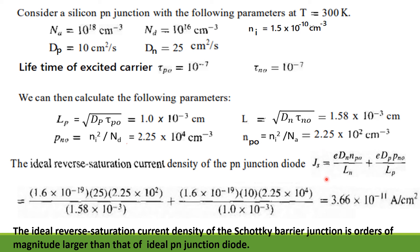We know that the ideal reverse saturation current density of the P-N junction diode is J equal to (eDN·npo / LN) + (eDP·pno / LP). Substituting all these values, we get the answer as 3.66 × 10⁻¹¹ A/cm². Comparing JST of the Schottky barrier diode with JS of the P-N junction diode, we can see that the ideal reverse saturation current density of the Schottky barrier diode is orders of magnitude larger than that of the ideal P-N junction diode.